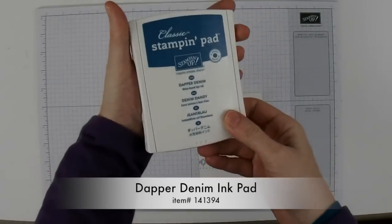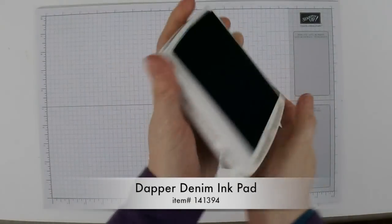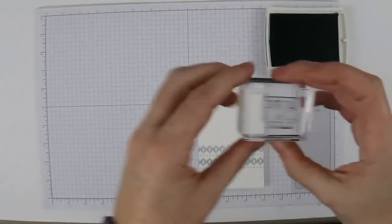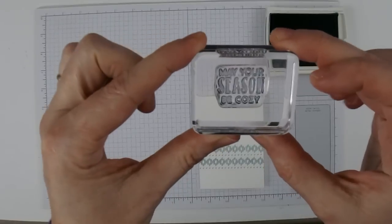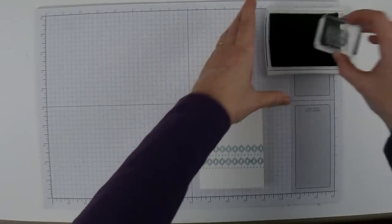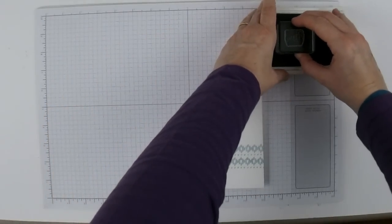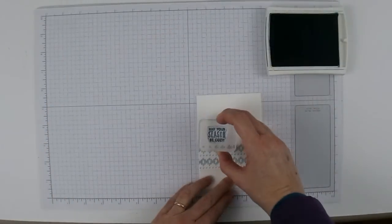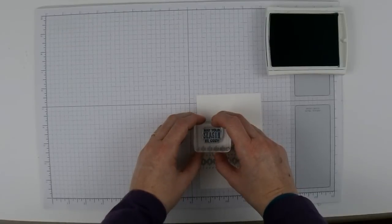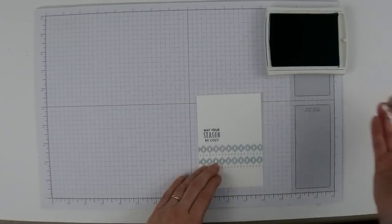Now you're going to need your Dapper Denim ink pad. This is the perfect greeting for the sweater stitching. It says may your season be cozy. So let me ink that up and I'm just going to put it just on top of the stitching to the left here.